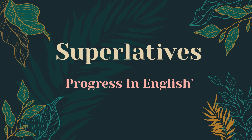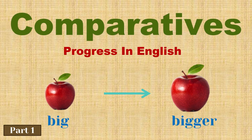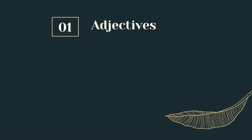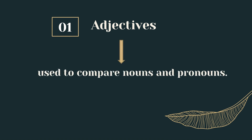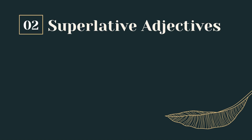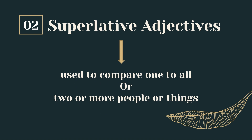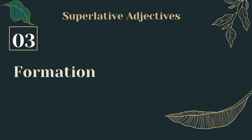Hello everyone, welcome back to our YouTube channel. In this video we are going to talk about superlatives. If you haven't watched part one of the comparatives video, make sure you do — the link is down in the description box below. First, what are adjectives? They are used to compare nouns and pronouns. Superlative adjectives are used to compare one to all, or two or more people or things.